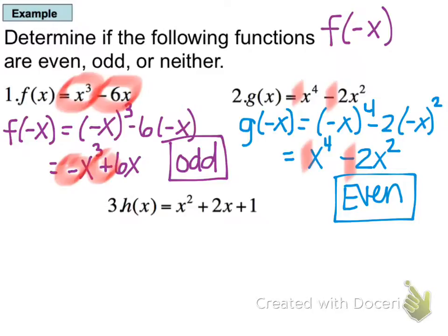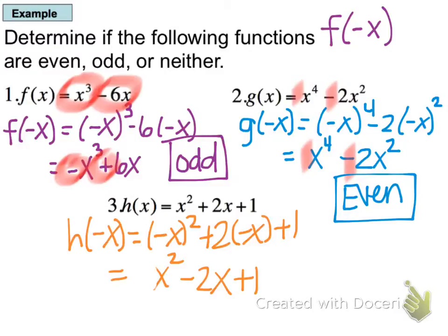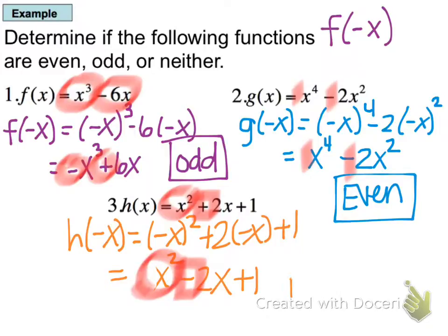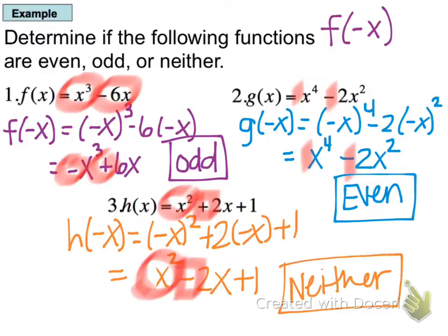Pause your video and try the last one. Notice that one sign stayed the same but another sign changed — we had a mix. Since both things happened, we say this function is neither even nor odd. So it's not always even or odd; sometimes it's neither.